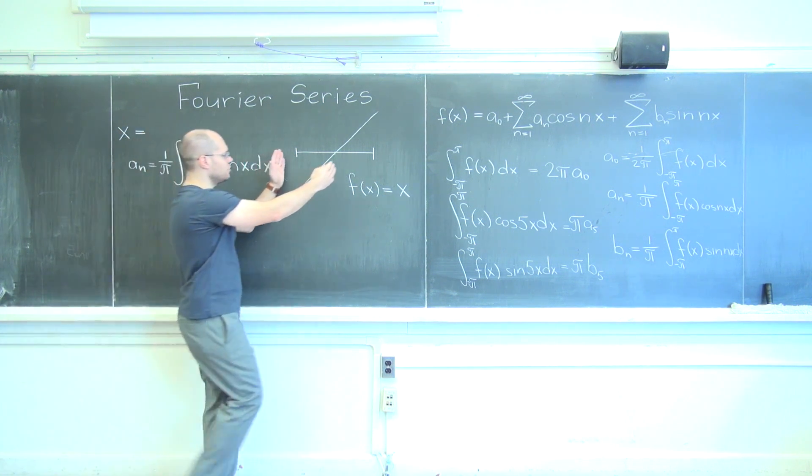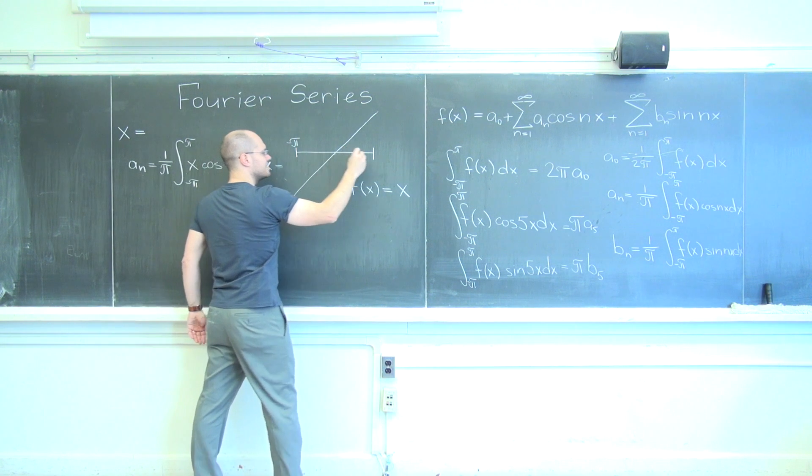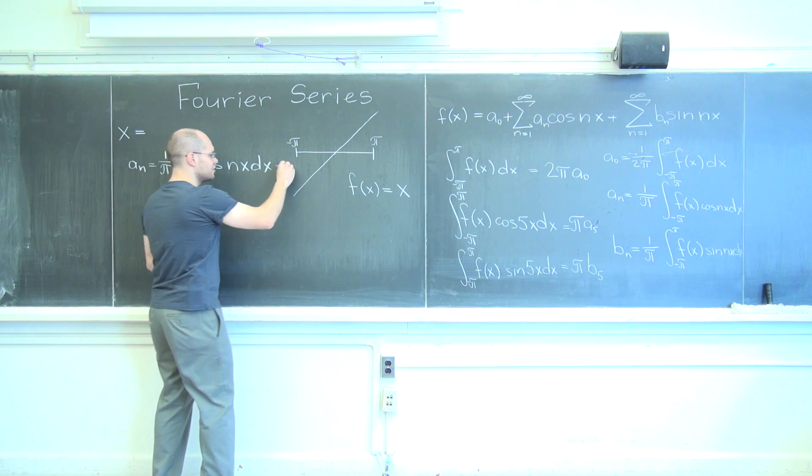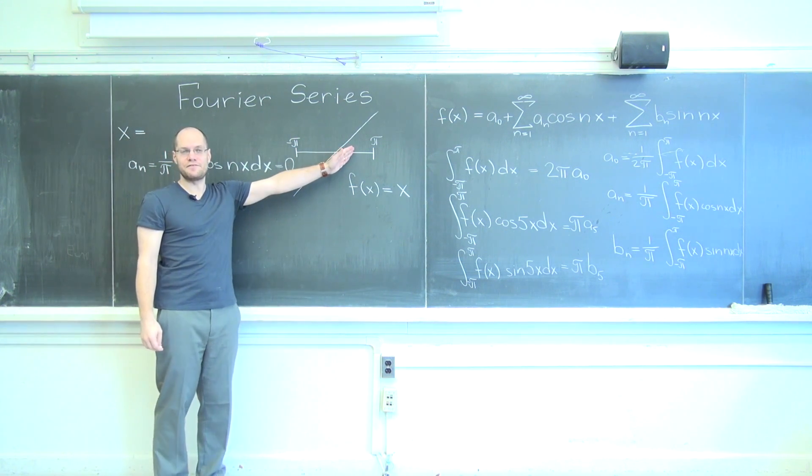It's opposite on either side of zero, and we're integrating it over a symmetric interval. So this is zero. So there are no cosines. Makes perfect sense.